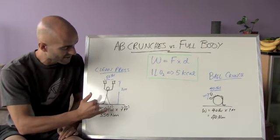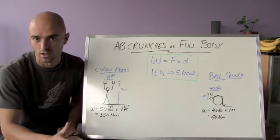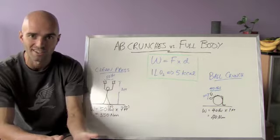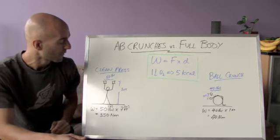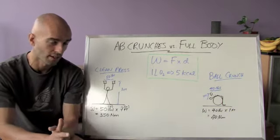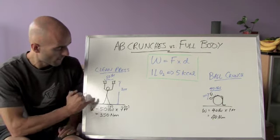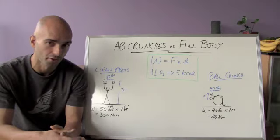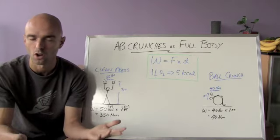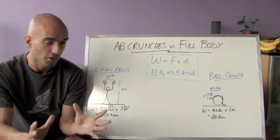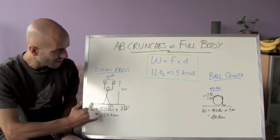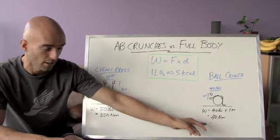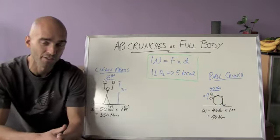And this time the distance that the person is covering is seven feet. So more or less, let's say this is a six foot person. They're pushing the weight above their head and the total distance from the floor is seven feet. Now this is where things are really interesting. Look at this: 50 pounds times seven feet gives us 350 newton meters. Again, that could be calories or whatever you want to call it. It's not really calories, but just a unit to show you the difference. Look at the difference in these two examples. A crunch is giving us 40. The clean press is giving us 350.